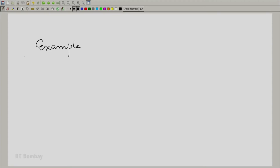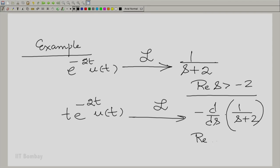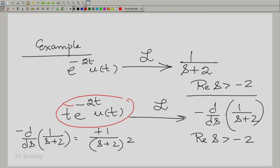Let us take an example. Let us take e raised to the power minus 2t u(t) for a change. We know its Laplace transform is 1 by s plus 2 with a region of convergence real part of s greater than minus 2. What is the Laplace transform of t times this? The answer would be the negative of the derivative of this expression with essentially the same ROC. What is this derivative? Minus d/ds, so this becomes plus 1. So the Laplace transform of this is 1 by (s plus 2) squared. Very simple.